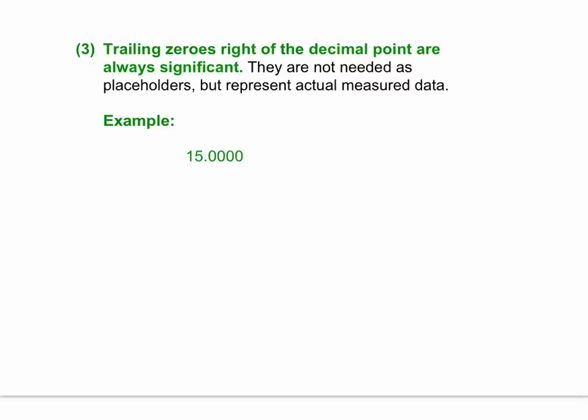Rule number three: any zero that ends a number to the right of a decimal point is considered to be significant. These zeros are not necessary as placeholders. They are not there to express magnitude, but they are there to actually express measured data. These are measured zeros.